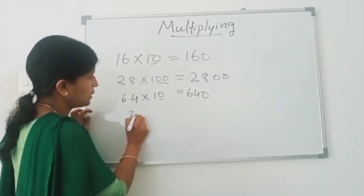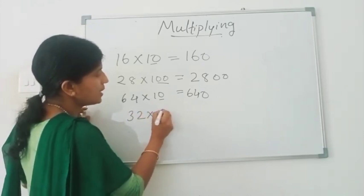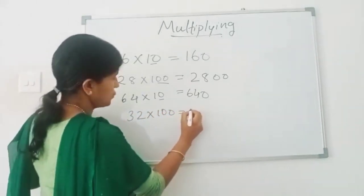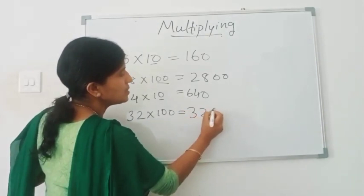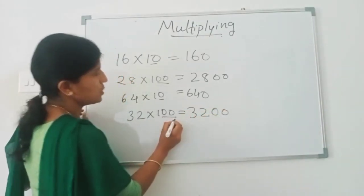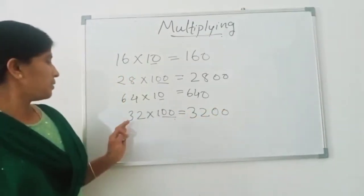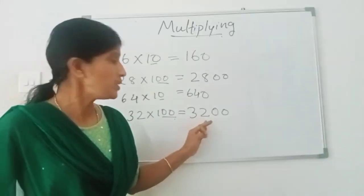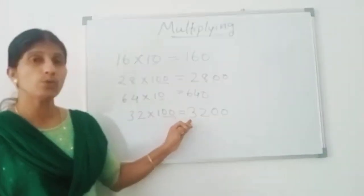What about 32 times 100? Just write 32 and these two zeros. Then, 32 times 100 is equal to 3200.